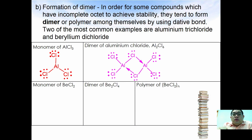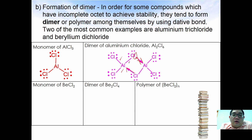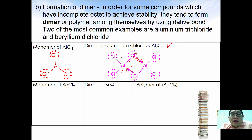In Al2Cl6, one lone pair electron from chlorine forms a dative bond to one aluminium, while another chlorine electron pair forms a dative bond to another aluminium chloride molecule. As a result, aluminium achieves octet — two, four, six, eight — making the dimer stable at room condition. Aluminium chloride only exists as the monomer AlCl3 when heated strongly under high heat.